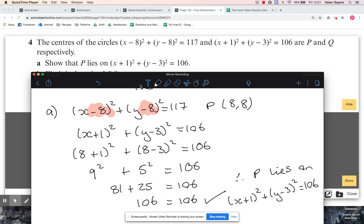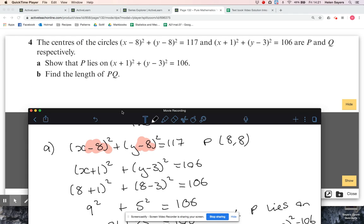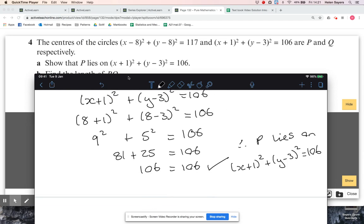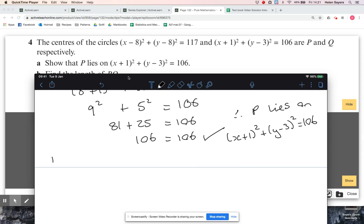Okay, all right. And then I think yeah, b isn't really related to that. Find the length of PQ. Yes, I think they're really just testing that you have all these key skills and you're reading the questions carefully. So we've already said that P is (8, 8), Q is the center of this circle, so that's going to be (-1, 3).